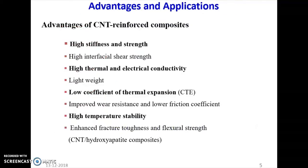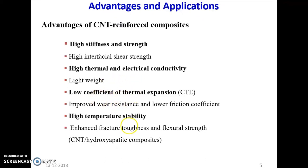Now, advantages and applications of CNT reinforced composite. The advantages of CNT reinforced composite are high stiffness and strength, high interfacial shear strength, high thermal and electrical conductivity, and light weight. This is one of the important properties of CNT reinforced composite. The density of iron is 7.8 gram per centimeter cube, but the density of carbon nanotube is only 1.6 gram per centimeter cube. So for aerospace applications, we need lightweight but high strength, and carbon nanotube reinforced composite can achieve those properties because it is very high strength as well as lightweight. The next important property is coefficient of thermal expansion.